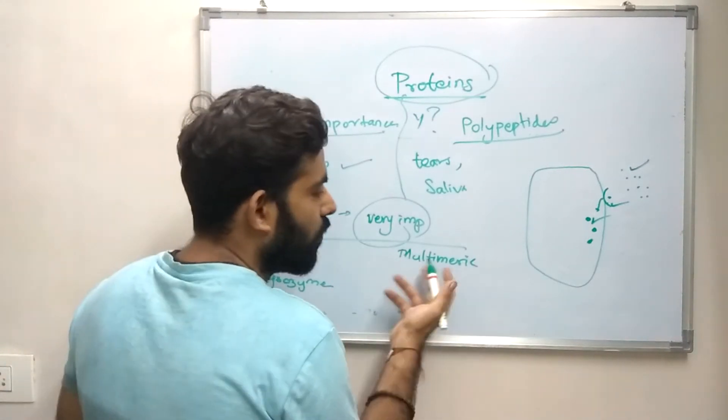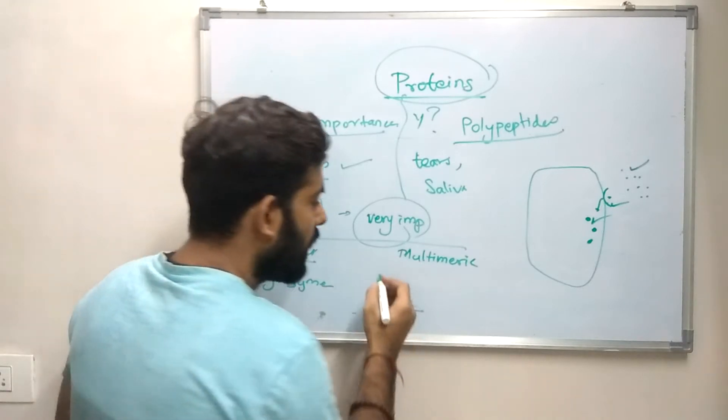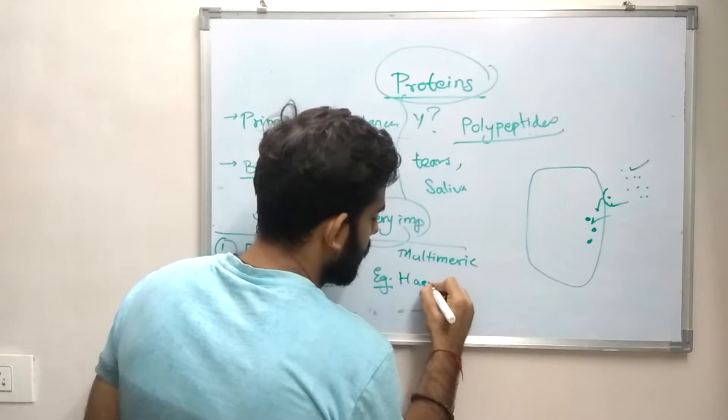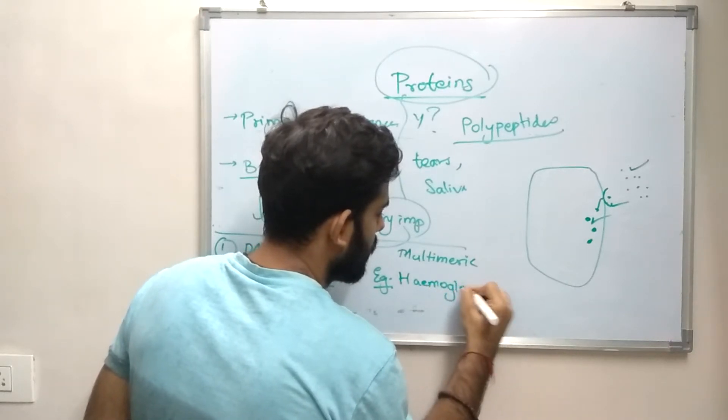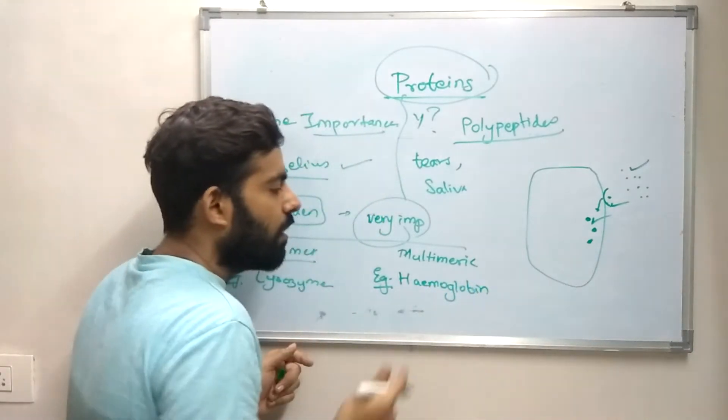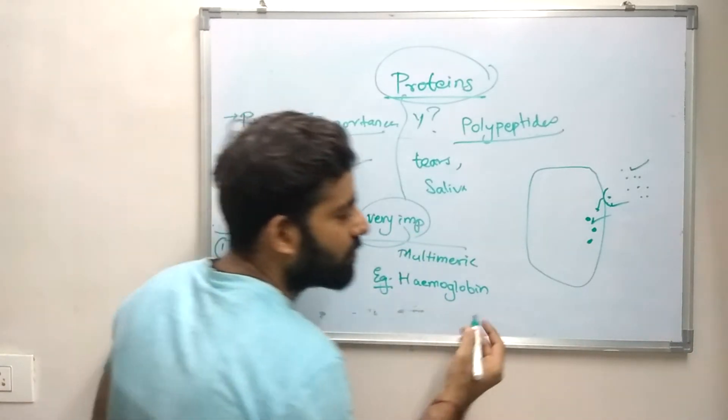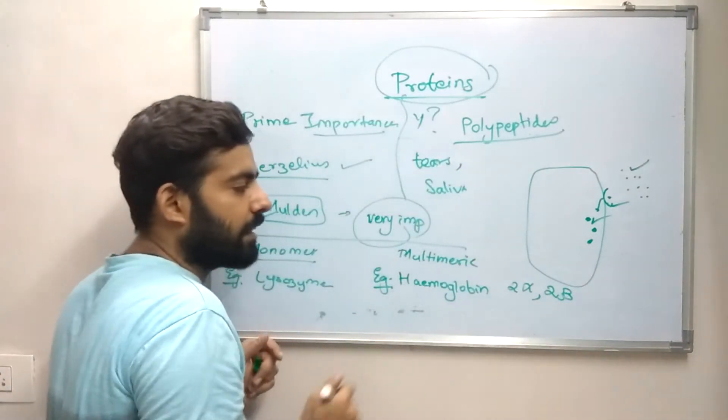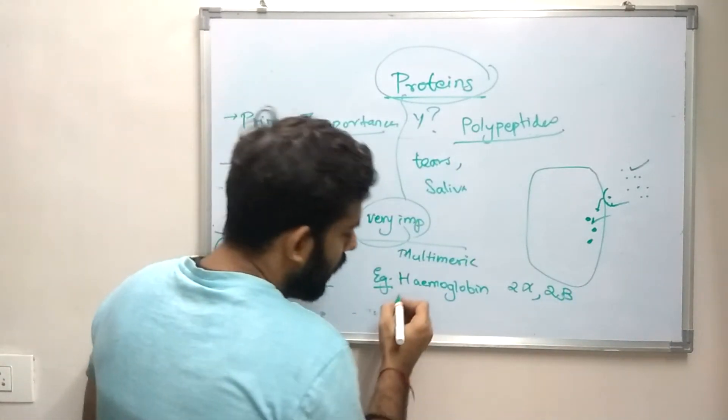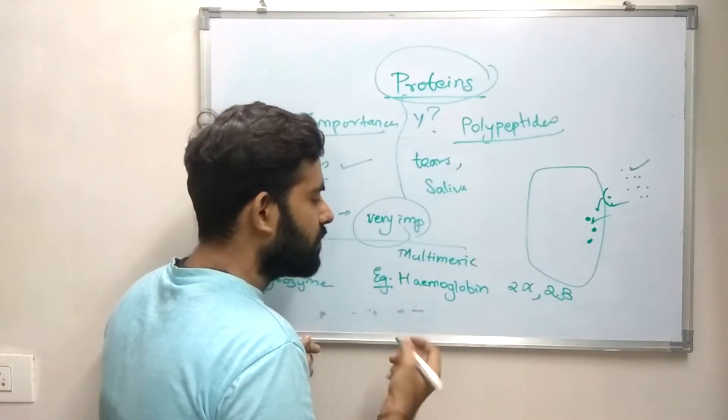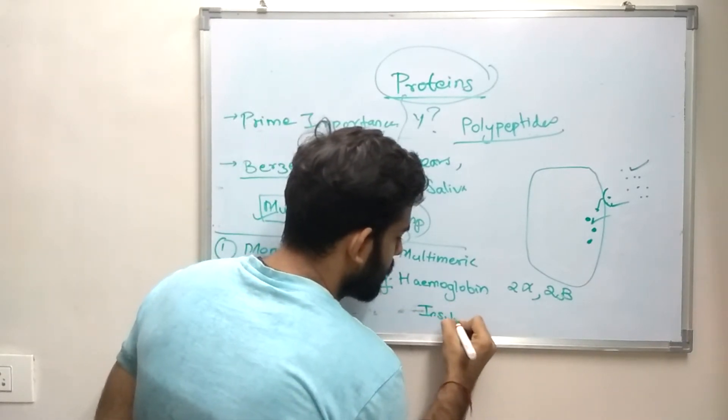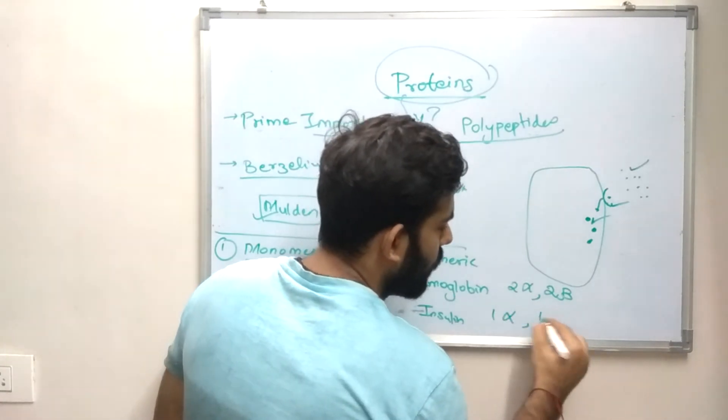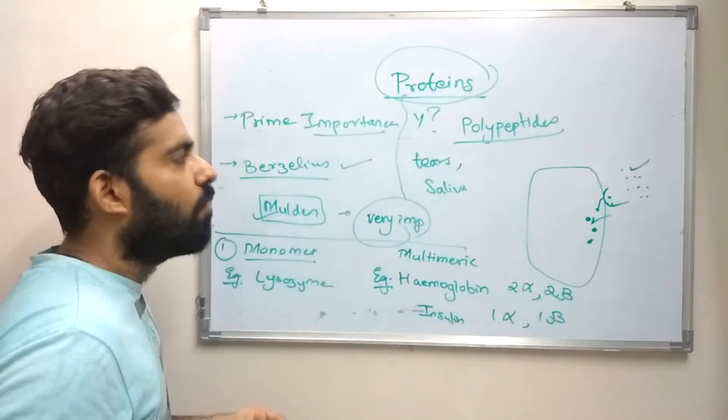Multimeric proteins containing many polypeptides are known as multimeric proteins. Examples for multimeric proteins consist of hemoglobin. The reason why hemoglobin is a multimeric protein is because it consists of 2 alpha chains and 2 beta polypeptide chains. Another example for multimeric proteins will be insulin. Insulin consists of one alpha and one beta polypeptide chain.